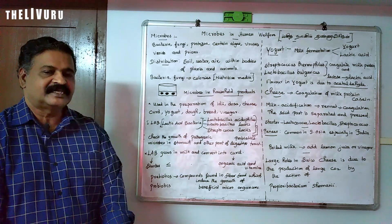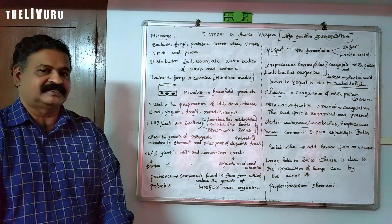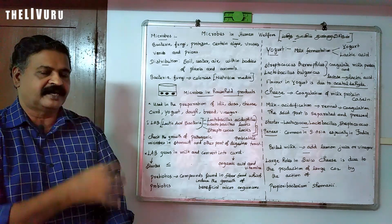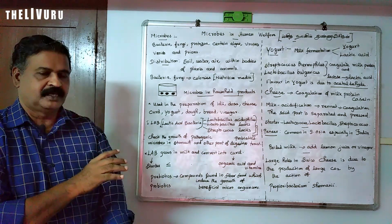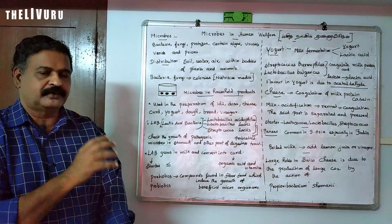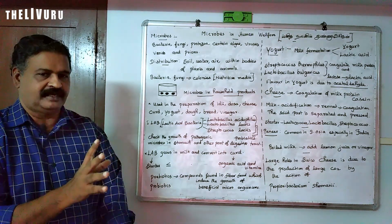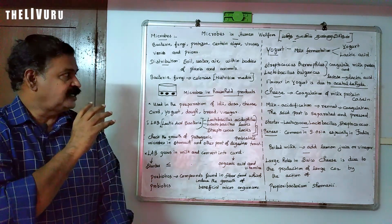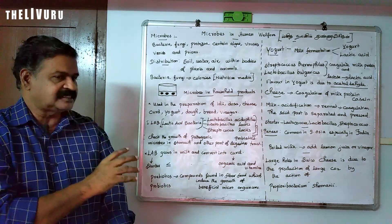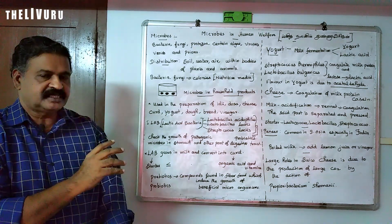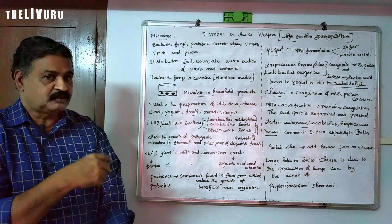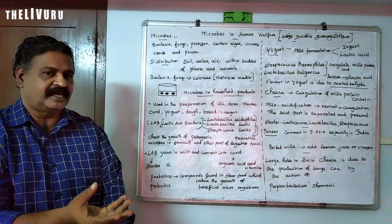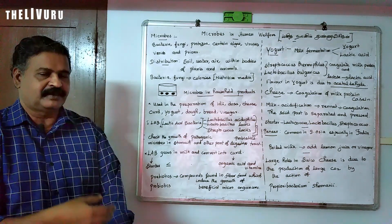Prions means these are proteins — some type of protein. Proteins are living, we can say. These are proteins which stimulate some other proteins in our body.